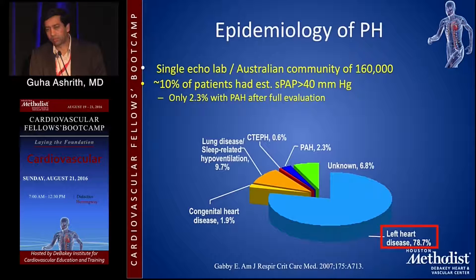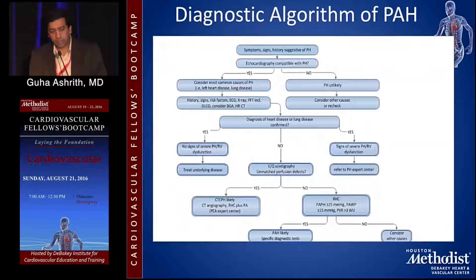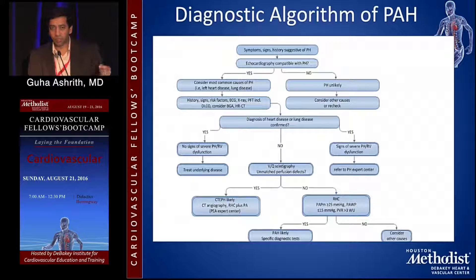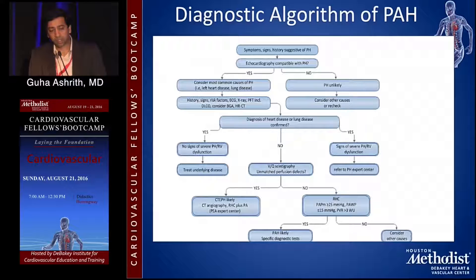If somebody gets referred to you for dyspnea on exertion and you get an echocardiogram showing a calculated systolic PA pressure over 40, where do you go from there? On the echocardiogram, you look at both the right and left side to see whether the patient has signs of LV diastolic or systolic heart failure. The most common cause of pulmonary hypertension is left-sided heart disease, so if patients have a large left atrium or signs of diastolic or systolic dysfunction, the pulmonary hypertension is likely coming from the left side.